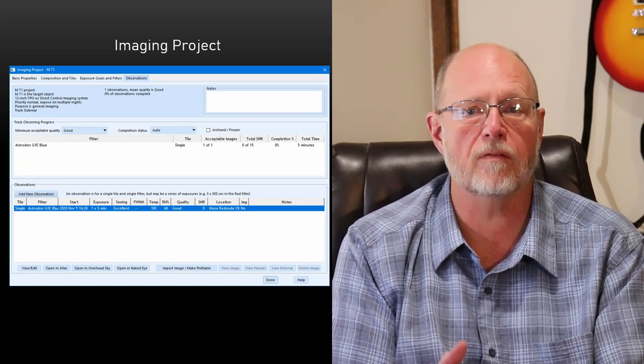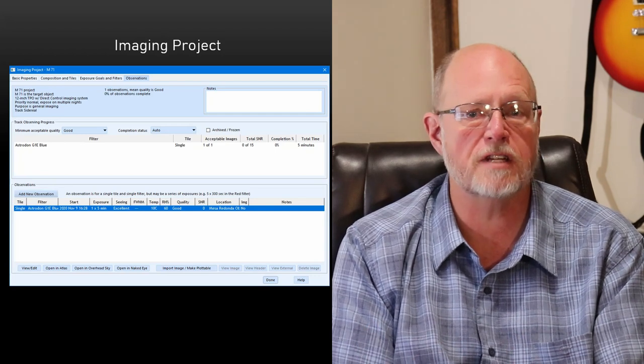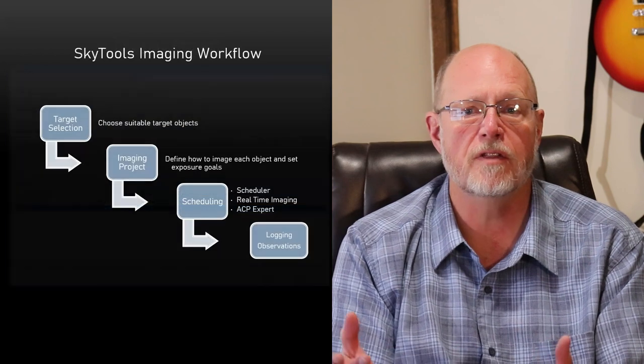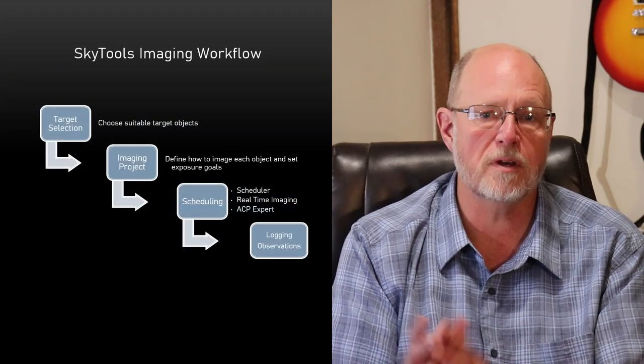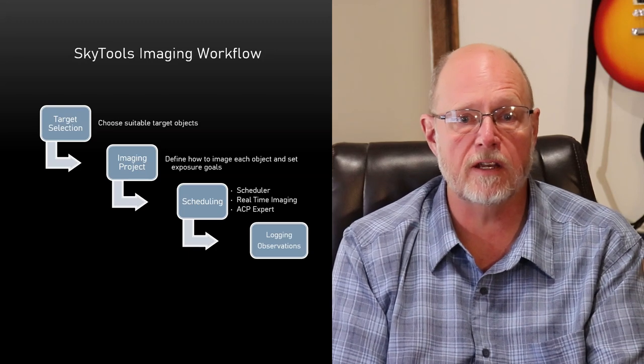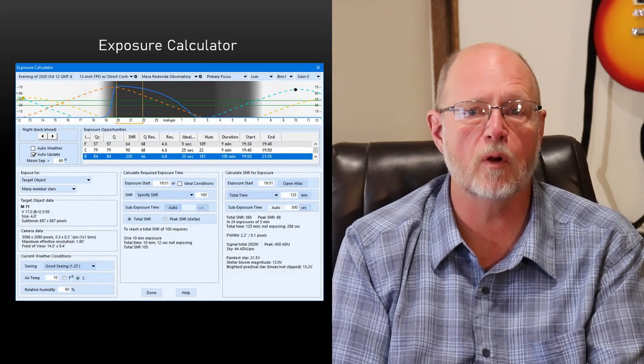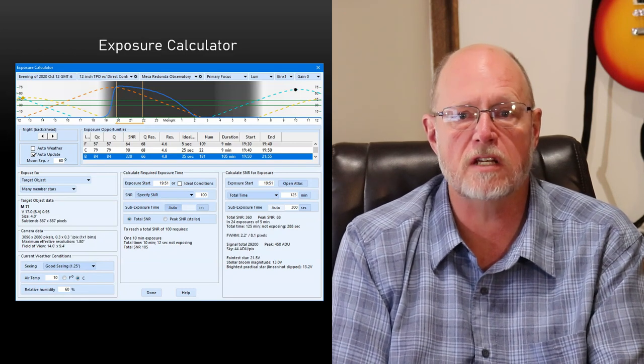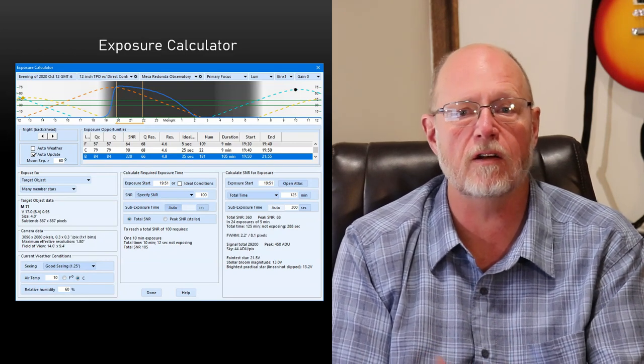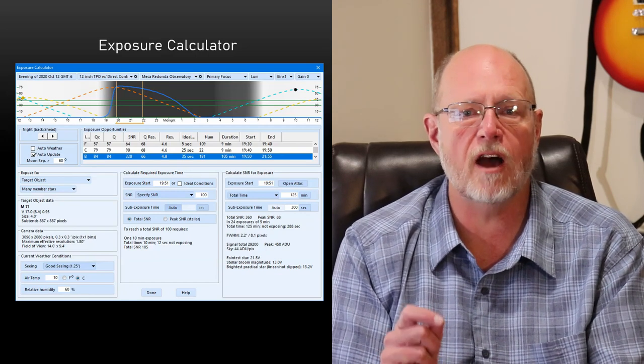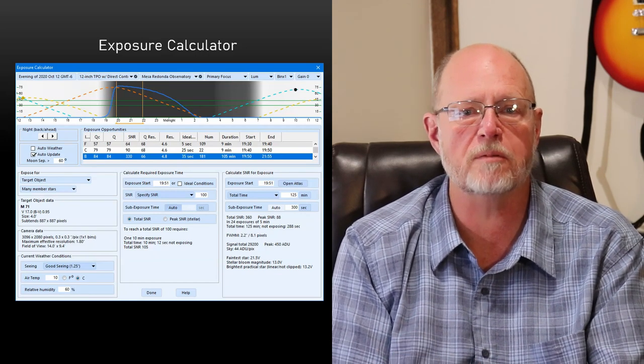So that's the basic workflow, but it's not the totality of the software. There are many other tools that supplement the basic workflow, and I'm going to mention a few. The exposure calculator is very useful for exploring your options for a specific object, including the effects of changing sub-exposure times or changing just about anything else. Experimenting with it can offer many insights into how best to image a target object.